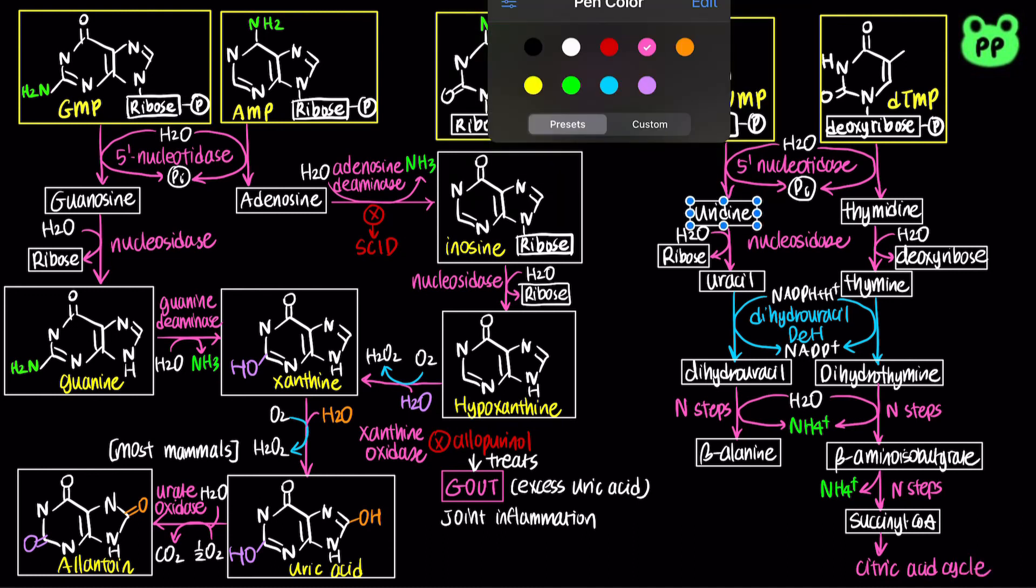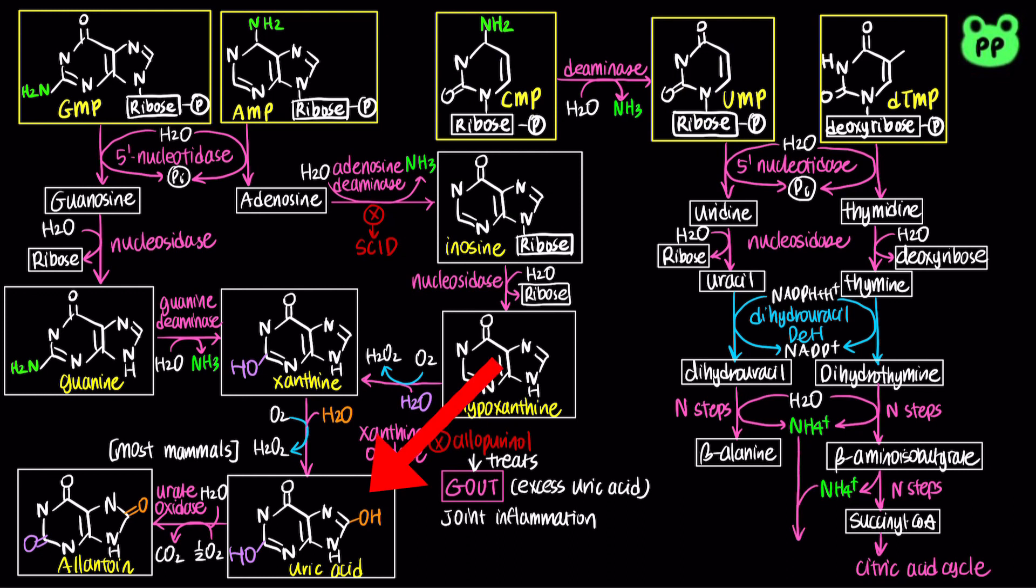From these reactions, we see that purine nucleotides, guanylate and adenylate, are degraded to uric acid and allantoin, whereas pyrimidine nucleotides are degraded to ammonium ion, which will enter the urea cycle.